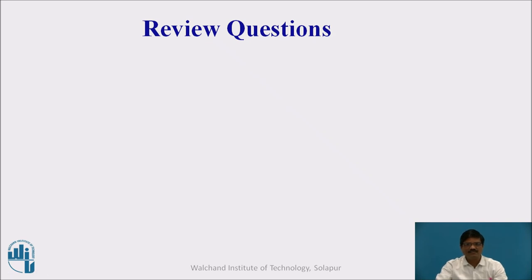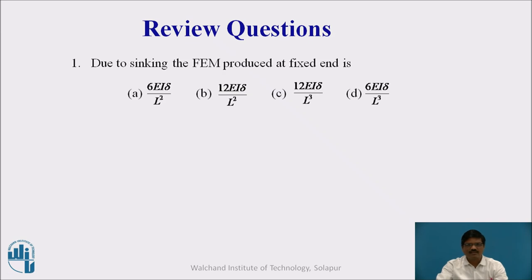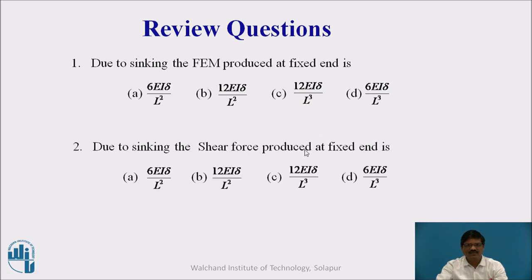Let us take a pause here. The first question: due to sinking, the fixed end moment produced is — four options are given. The second question: due to sinking, the shear force produced at the fixed end is — four options are given. Think about it, pause the video, and when you have the answer, resume.